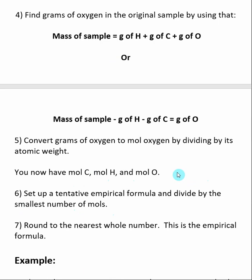From here on out, it's very much like the percent composition formulas we talked about in the previous sections, where you convert the number of moles to an empirical formula. So you set up a tentative empirical formula, divide by the smallest number of moles, and round to the nearest whole number. This will give you the empirical formula.